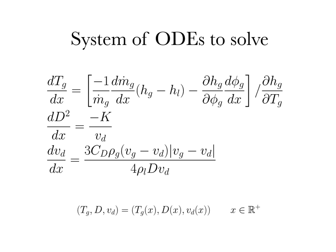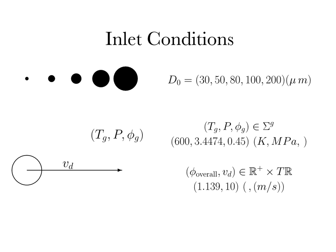The chamber parameters we'll consider for methane are as follows. A_tot_F-inject is the total cross-sectional area through which the liquid fuel is injected — the sum of the cross-sectional areas of all the small holes in the injection plate. A_cc is the combustion chamber cross-sectional area, and L_cc is the total length of the combustion chamber. The values used are: A_tot_F-inject = 0.0157, A_cc = 0.157 m², and L_cc = 0.75 m.